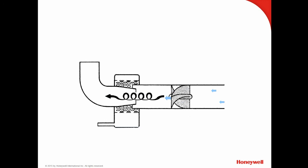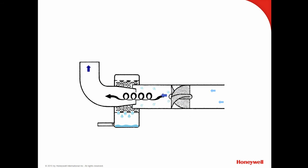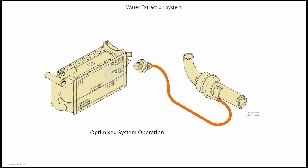Air from the condenser enters the water extractor. The helix of the internal vanes spins the air. The heavy water droplets are centrifuged outwards towards the duct wall and pass through the perforated inner sump wall. As the water collects in the sump, bleed air forces the water out of the drain tube to the water spray nozzle at the heat exchanger. Dry air then passes through the check valve and enters the turbine section of the ACM.